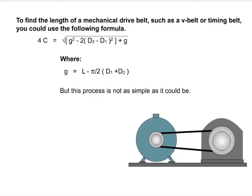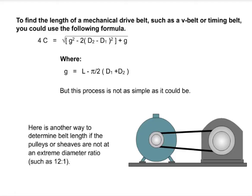But this process is not as simple as it could be. Here is another way to determine belt length if the pulleys or sheaves are not at an extreme diameter ratio, such as 12 to 1.